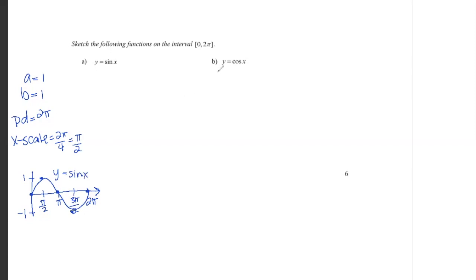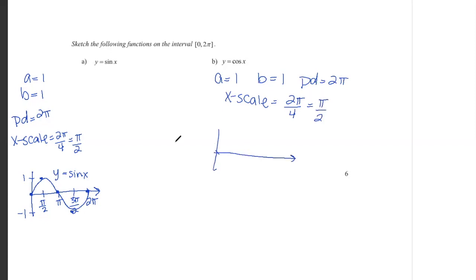Now I'll do the same thing for cosine x. a equals one, b equals one, period is two pi, and the x-scale is pi over two — same as before. So I label pi over two, pi, three pi over two, two pi. Cosine of zero is one, cosine of pi over two is zero, cosine of pi is negative one, cosine of three pi over two is zero, and cosine of two pi is one. That gives me one full cosine curve.